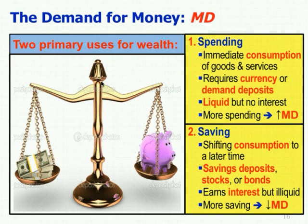The more people spend of their wealth, the more it will increase money demand because you need more currency and demand deposits. On the other hand, if you put it towards savings, that's actually shifting consumption to a later time — you're choosing to consume, just not now. I'm going to save it for a rainy day, for the future, for college or my kids. You're shifting consumption to a later time.